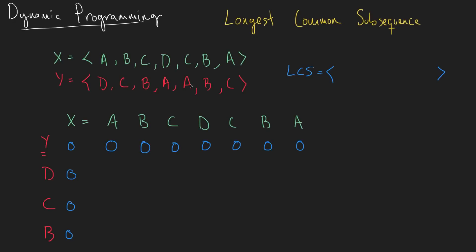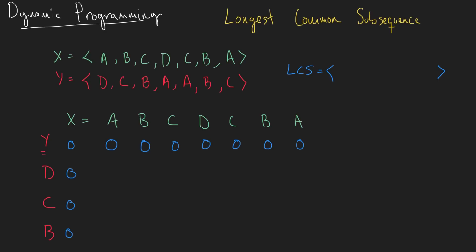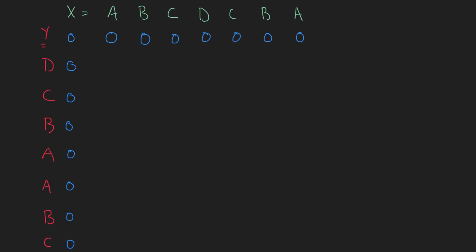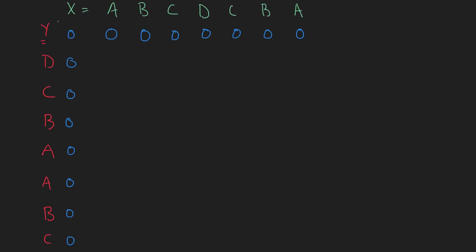Welcome to our 23rd video on data structures and algorithms. We are going to do an example of finding the longest common subsequence out of two lists. The first thing we're going to do is set up a two-dimensional array, visualized by drawing this table. We have to initialize the first row and first column all to zeros, as this is our starter dummy row and column.